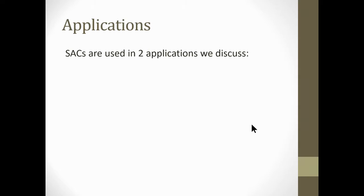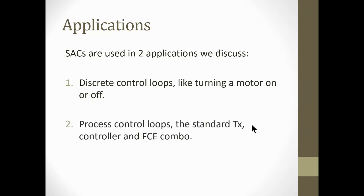Applications: SACs are used in two applications we discuss. Discrete control loops, like turning a motor on or off, so if it's discrete it's on-off, and we can use a standalone controller for that. And the other one: process control loops, a standard transmitter-controller and final control element combo. So you can have something like a pressure transmitter or level transmitter, whatever you're controlling, and then we control that final control element to keep that level or temperature or anything that we're doing at a setpoint.